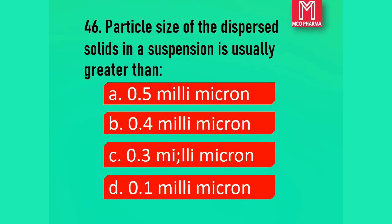Question number 46 and 47. Particle size of the dispensed solid in a suspension is usually greater than: Option A, 0.5 millimicron. Option B, 0.4 millimicron. Option C, 0.3 millimicron. Option D, 0.1 millimicron. Correct answer: Option A, 0.5 millimicron.